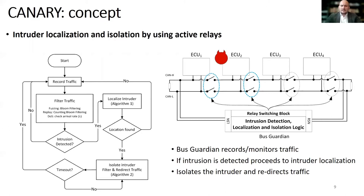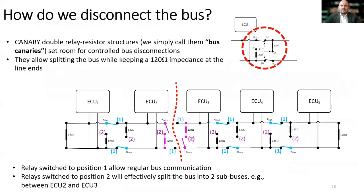Once an intrusion is detected, the bus guardian will disconnect segments of the bus in an attempt to localize and isolate the intrusion. The question is: how do we disconnect bus segments without damaging the transmission? We cannot simply cut the wires. For this we introduce a simple engineering tool which we call the bus canary. The bus canary is a double relay resistor structure that allows bus disconnections at any point on the bus without losing the 120-ohm end-of-line impedance. For example, the canary between ECU2 and ECU3, when switching from position 1 to position 2, will simply split the bus into two sub-buses while keeping a 120-ohm impedance constant at the ends of the lines.